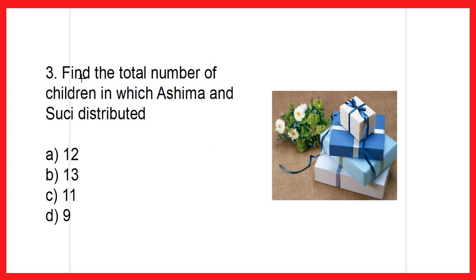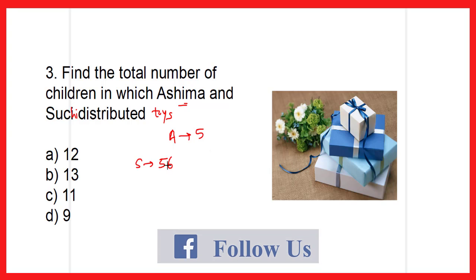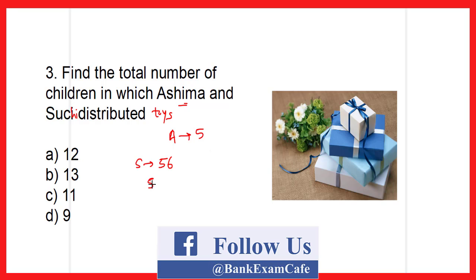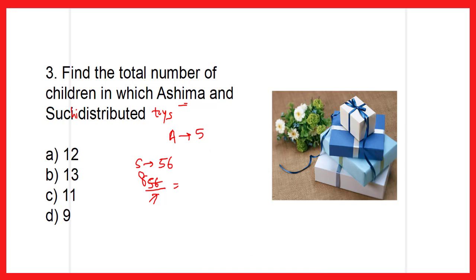Find the total number of children among whom Ashima and Suchi distributed the toys. From the previous question, Ashima distributed toys to 5 children. Now for Suchi: she distributed 56 toys and each child got 7 toys, so 56 divided by 7 equals 8 children. Ashima distributed to 5 children and Suchi to 8 children, giving a total of 13 children. Therefore option B is the correct answer.